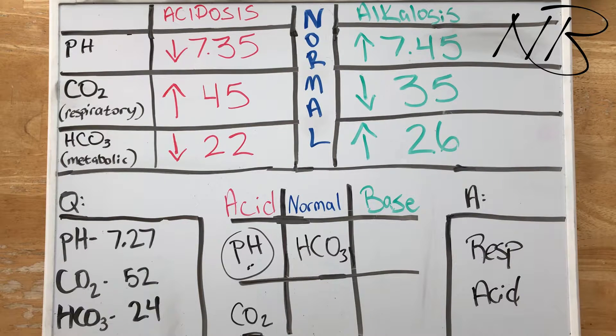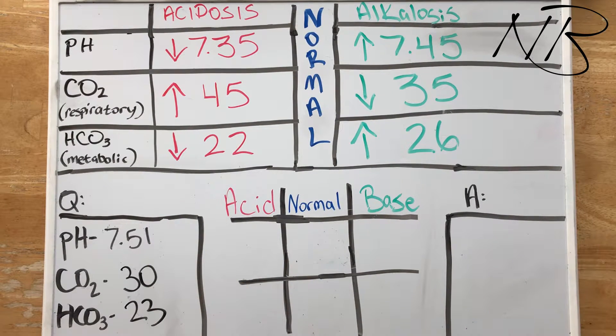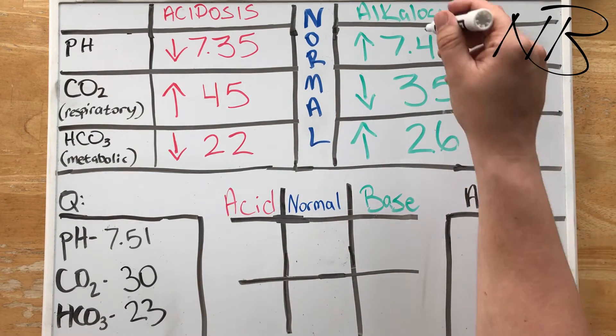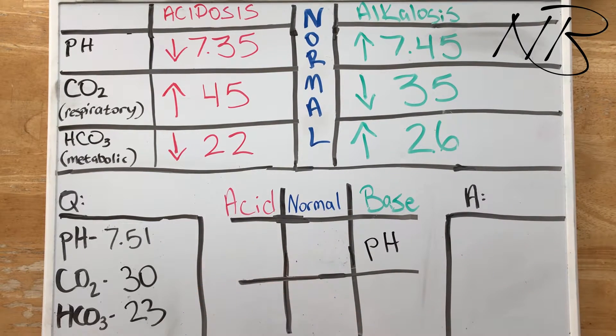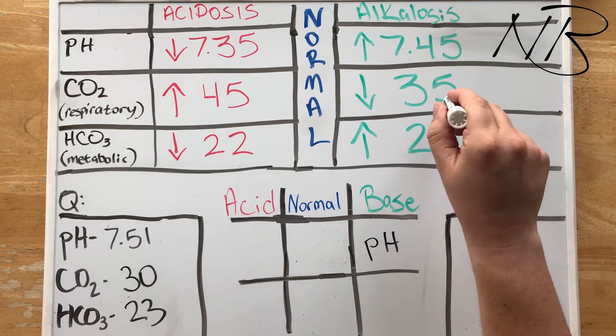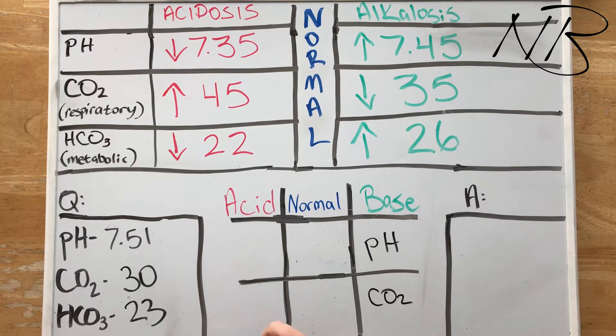Our next question tells us that we have a pH of 7.51, CO2 of 30, and bicarbonate of 23. Again, we always look at the pH first. 7.51 is above 7.45, therefore it falls in the alkalosis column. Our CO2 is 30, our CO2 is below 35, therefore our CO2 is going to fall in the alkalosis column. And then our bicarbonate is in between 22 and 26, therefore it is normal.